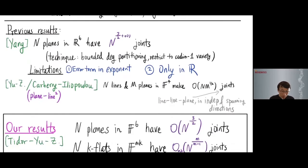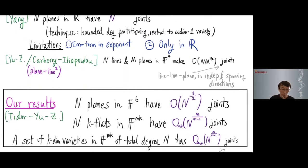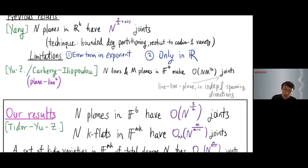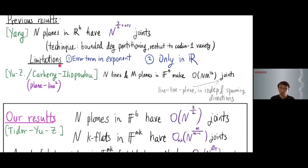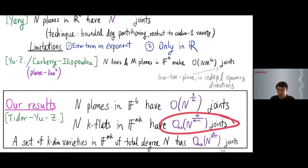Our results resolve all of these questions in the most general form we can think of. In particular, as special cases: n lines in arbitrary fields have at most O(n^(3/2)) joints — resolving the limitations in Yang's results by removing the error term in the exponent and working in arbitrary fields.